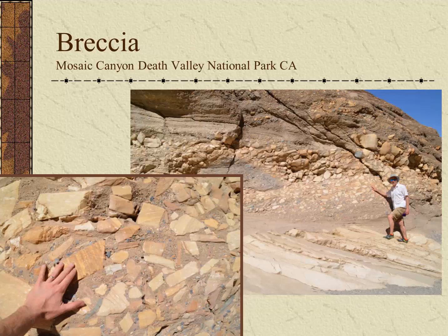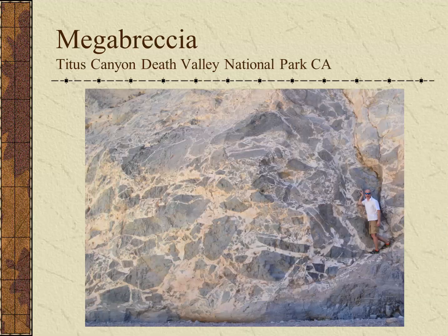Breccias, composed of sharp angular gravel fragments, are often found in volcanic or fault-prone regions. This is a particularly beautiful example of a cobble-sized breccia in Mosaic Canyon in Death Valley National Park. Another example from Death Valley is in Titus Canyon, where there are some particularly large boulder-sized breccias.